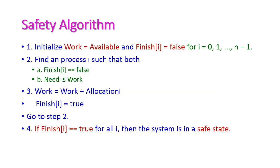Need equals Maximum minus Allocation — that is, the maximum number of resources requested by the process minus the allocated resources for that process. Sometimes Banker's algorithm is also known as the safety algorithm because it ensures the safety of the system. So let us see the algorithm step by step. It has four steps.